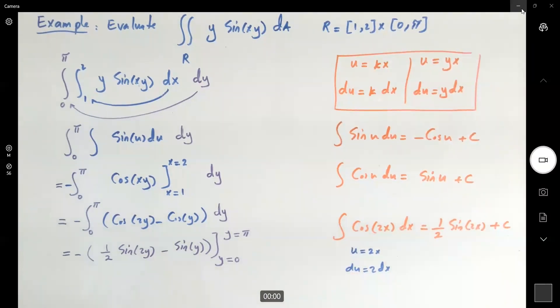Very well. So this guy becomes negative, you have a half sine 2 pi, minus sine pi, just substitute this here, minus, here you have a half, sine 0, minus sine 0.